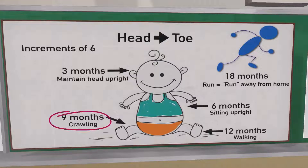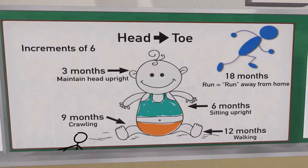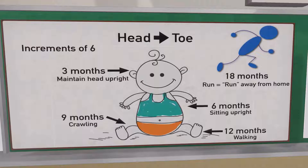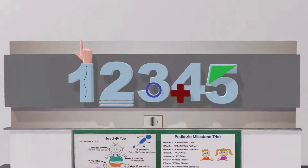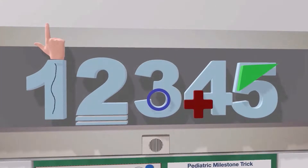At nine months, we come to the legs, which reminds us of crawling — a baby should be able to crawl. At 12 months the baby should be able to walk on his or her own. And at 18 months, the child should be able to run. Now let's talk about fine motor skills — these numbers represent age in years.